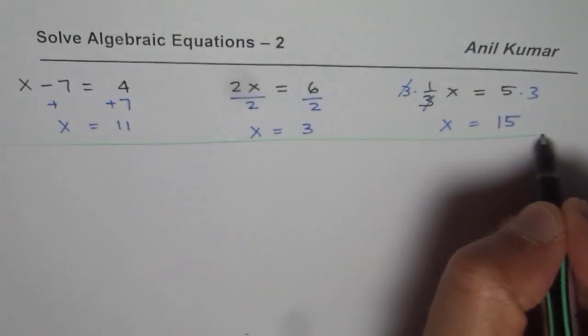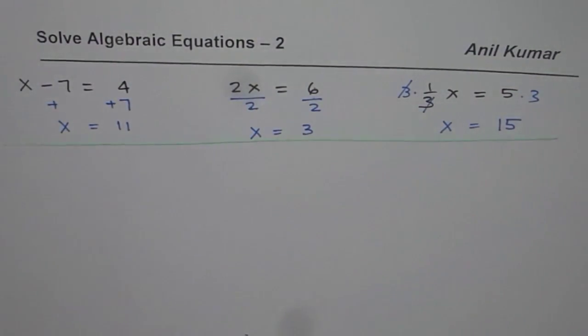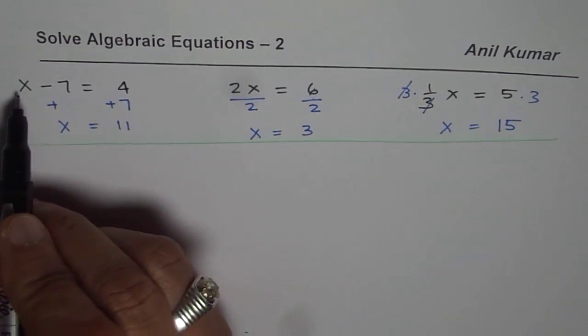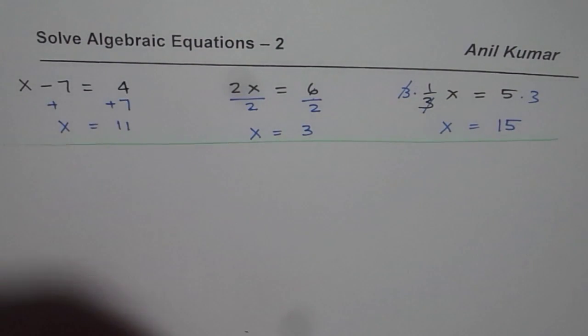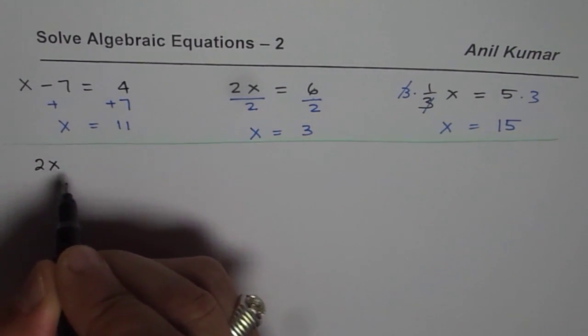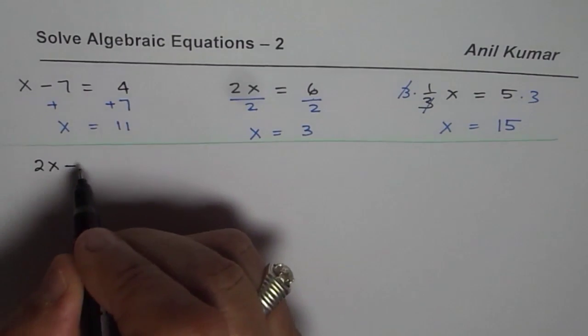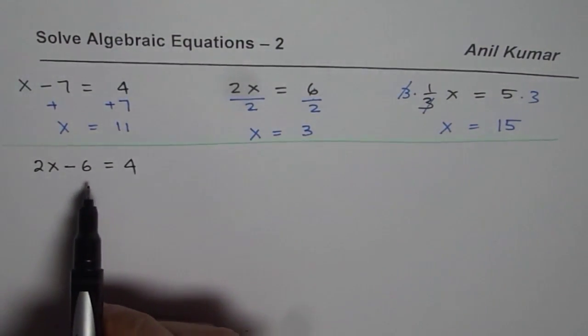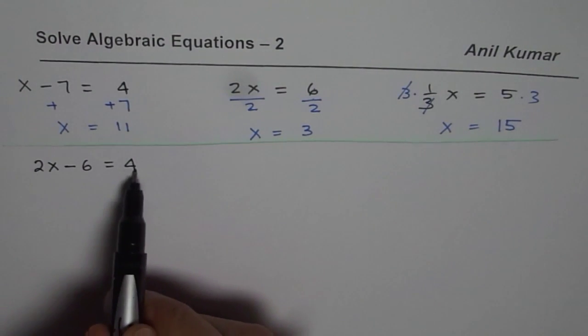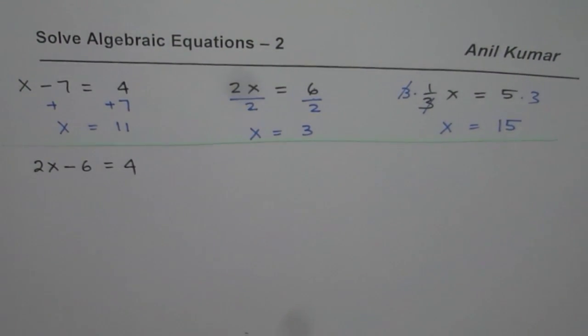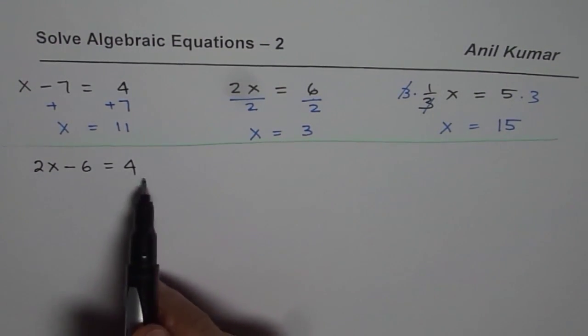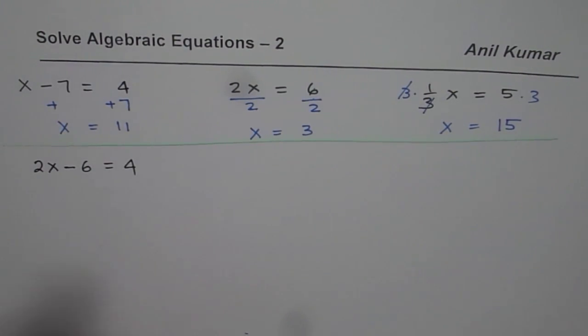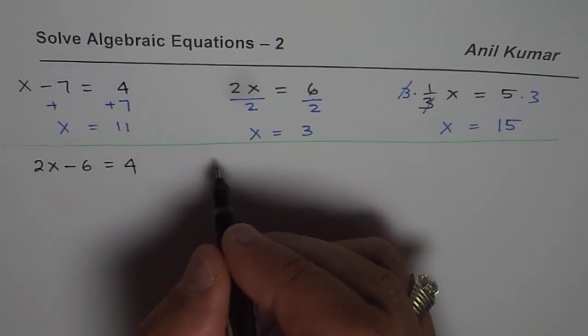algebraic equations in the previous video. Now we will combine them, you get the point. So instead of just saying x minus 7 equals 4 we will see 2 times x minus 6 equals 4. First operation will be add 6, second will be divide by 2. So this is the kind of work which we are going to do now. Let's practice with this.